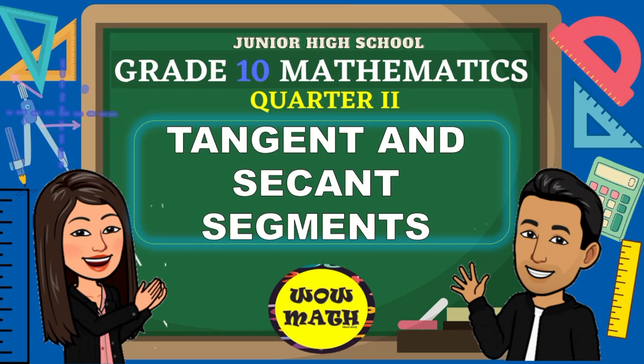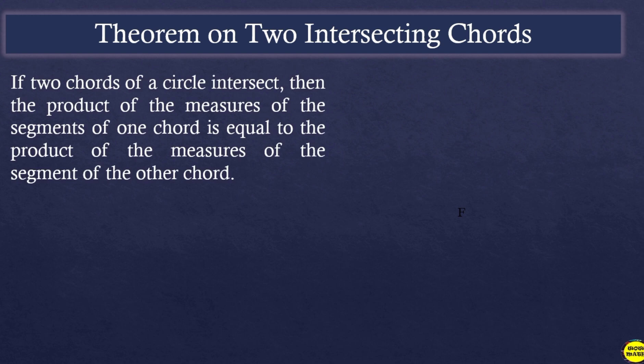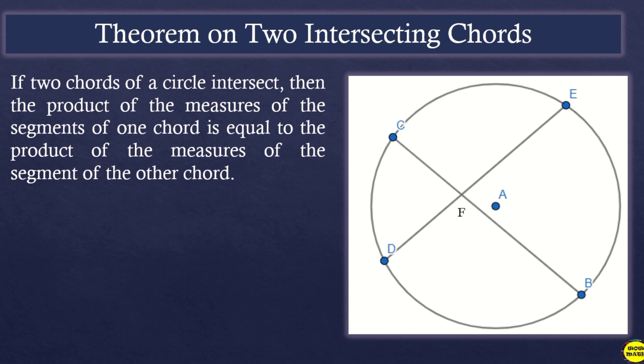Good day everyone. In this video lesson we will discuss tangent and secant segments. Here is the theorem on two intersecting chords: if two chords of a circle intersect, then the product of the measures of the segments of one chord is equal to the product of the measures of the segments of the other chord.